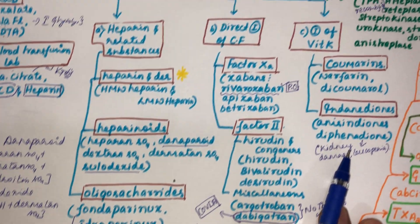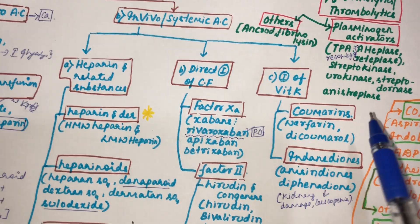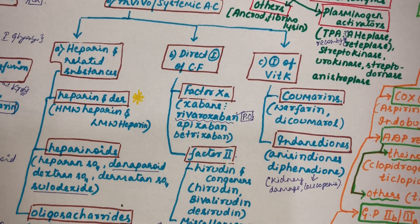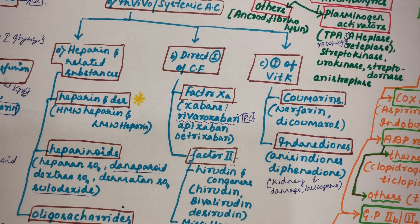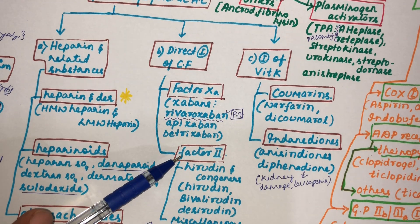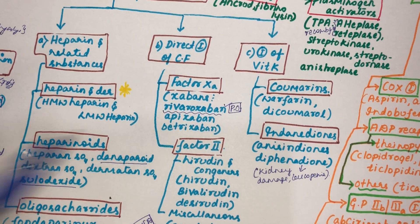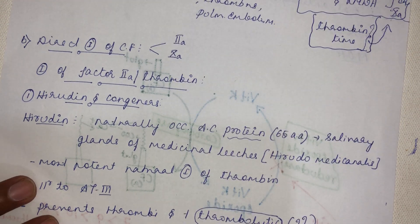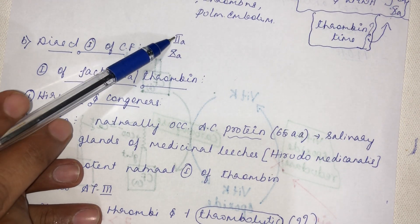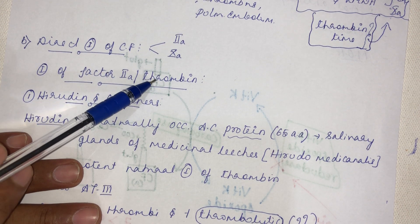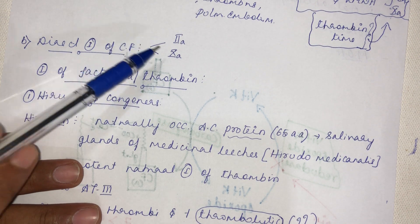The second group of in vivo anti-coagulants are direct inhibitors of clotting factors — where there is direct inhibition of factor 2a (thrombin) and factor 10a. Heparin is an indirect inhibitor of thrombin; the drugs in this group are direct inhibitors. The first subgroup is direct inhibitors of factor 2a, which is thrombin.